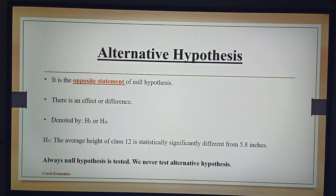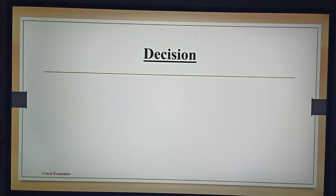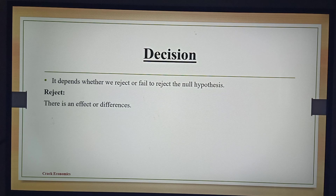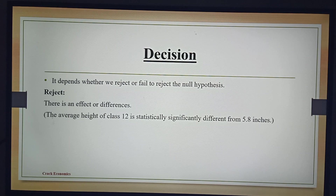We never test the alternative hypothesis. We always test the null hypothesis and we make the decision. The decision depends on whether we reject or fail to reject the null hypothesis. Suppose we reject the null hypothesis — that means there is an effect or difference. So, in our example, if we reject the null hypothesis, this means that the average height of class 12 is statistically significantly different from 5.8 inches.